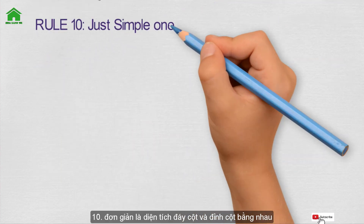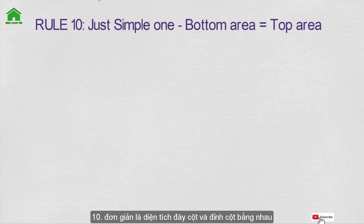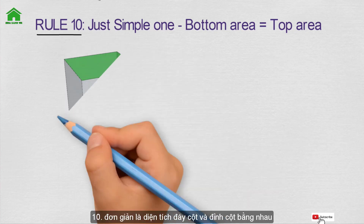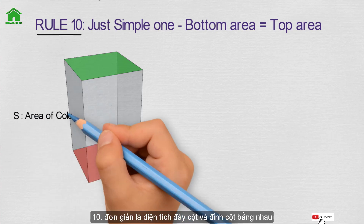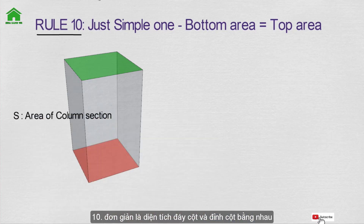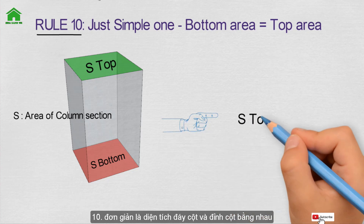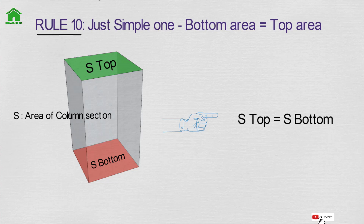Rule number ten, condition 1: the bottom cross-sectional area must be equivalent to the top cross-sectional area. Here is the model of the column where S is the area of the column section — the bottom section area equals the top section area.